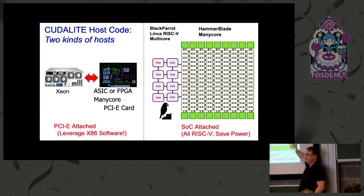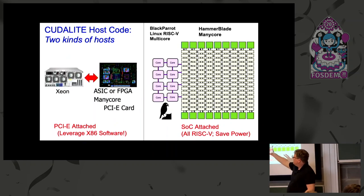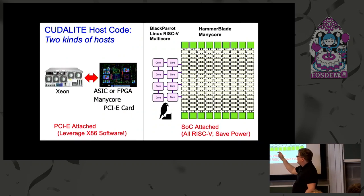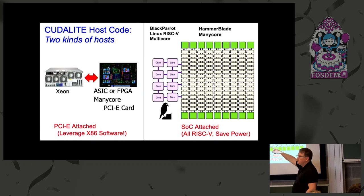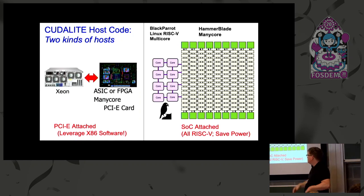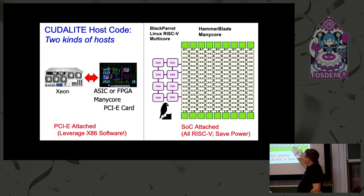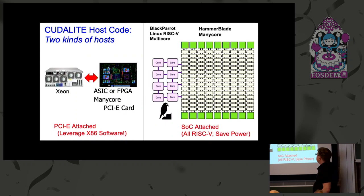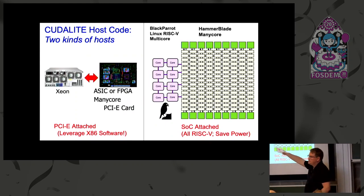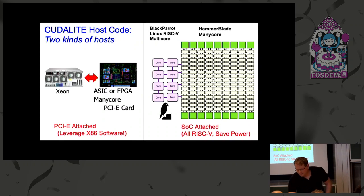The ManyCore cores are highly specialized for dense compute, but we also need a control processor. There are two flavors: first, we support PCIe attached acceleration, where we have a ManyCore chip on a PCIe board connected to a Xeon server. We have this running on AWS F1, where an FPGA simulates our ManyCore with x86 host code on the Xeon. In the longer term, our goal is to have a Black Parrot RISC-V processor integrated on the same SoC as the ManyCore, so that PyTorch running on RISC-V on Black Parrot can offload calls directly.